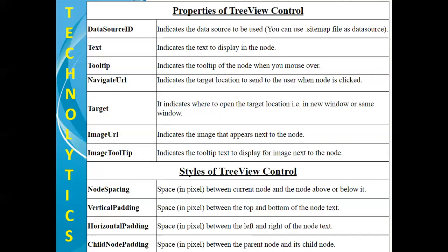There are various styles of Tree View Control. The first style is node spacing, where you can put the pixel value which indicates the space between the current node and the node above or below it. Vertical padding is the space between the top and bottom of the node. Horizontal padding is the space between the left and right of the node. And child node padding indicates the space between the parent node and its child node.